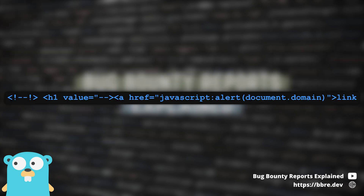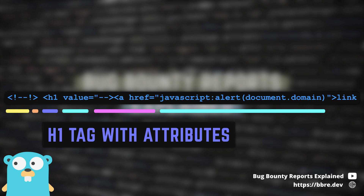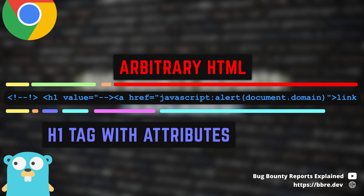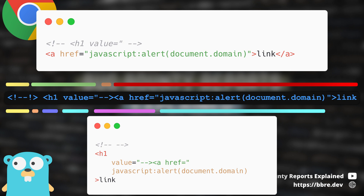So if I use a payload like this, my hypothetical validator would see an empty comment first, and then an h1 tag with some attributes which are considered safe. So this description would be allowed. But then it would be shown to users and processed by their browsers. The browser would see only a comment opening, and the h1 tag would be the comment's content. Then the comment would be closed and the rest would be processed as valid HTML. This way we smuggled an anchor tag past the validator, and the XSS can execute in the victim's browser if they click on the link.